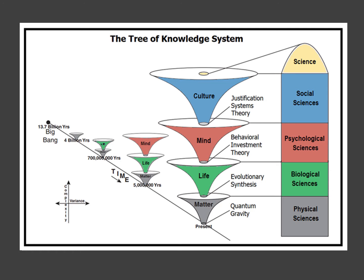Central to the TOK system is a pictographic representation of the universe from the Big Bang to the present. This diagram has several key elements. Some of these are likely to be familiar to individuals who have thought about the big picture. For example, like the popular Big History approach, the TOK system maps the history of the universe on the dimensions of time and complexity. However, the system also has several novel elements that enable it to resolve a number of long-standing philosophical difficulties.